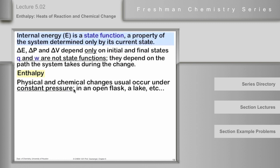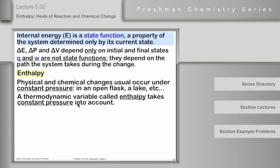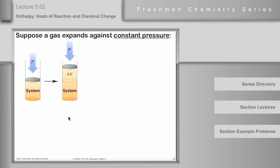Physical and chemical changes usually occur under constant pressure, in an open flask or in a lake or in a beaker sitting on a desk or something like that. Not always, but usually. So enthalpy is defined to take constant pressure into account. Here's how it does it.